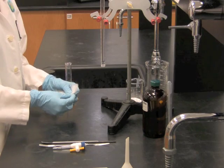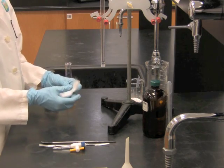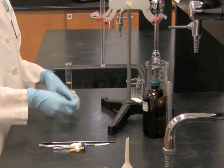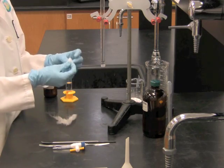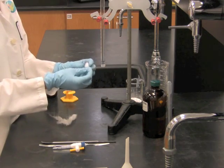While our sample is evaporating in the hood, we're going to prepare our column. First, we'll take a piece of glass wool and make a small plug to put in the bottom of a dry column.